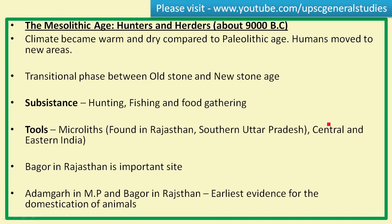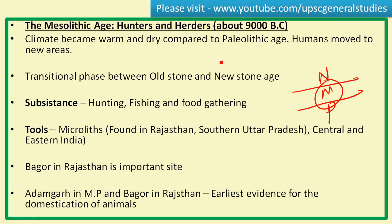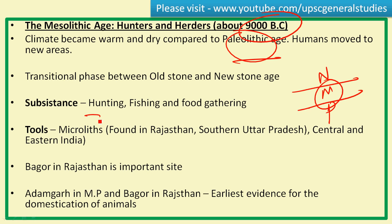The Mesolithic Age is the transition period between the Old Stone Age and the New Stone Age. The climate becomes warm and dry compared to the Paleolithic period. After the ice age ended, warm and dry conditions came into existence during the Mesolithic, and humans moved to newer areas due to the more congenial environment. Subsistence was based on hunting, fishing, and food gathering, so these people are also called hunters and herders.